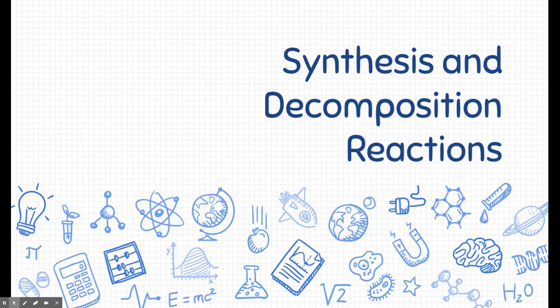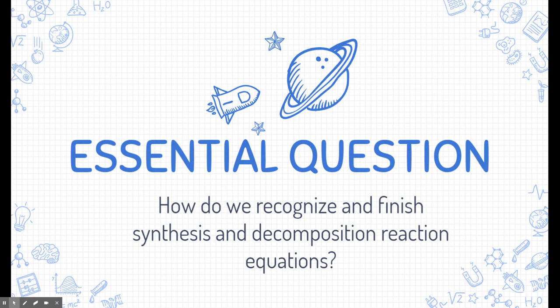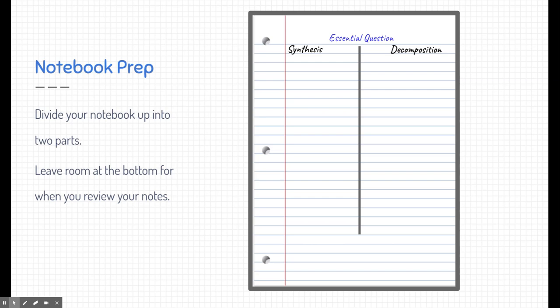All right, students, let's delve further into two of the five types of chemical reactions, namely synthesis and decomposition reactions. The essential question is: how do we recognize and finish synthesis and decomposition reaction equations? Take a moment to divide your notebook into two parts — synthesis and decomposition. We're going to compare and contrast these two and see how they're similar and different. Leave room at the bottom to summarize your notes and answer the essential question.